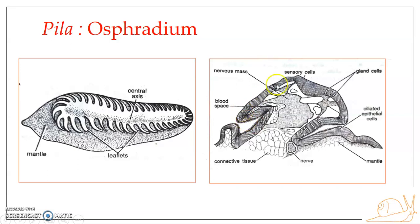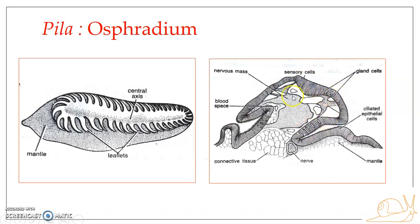The ciliated epithelial cells are found along the part of the osphradium which lines the attached margin. The sensory cells and glandular cells are devoid of cilia. The major part of the epithelium is formed of sensory cells. The glandular cells, found in between the sensory cells, are flask-shaped and scattered among the sensory cells.